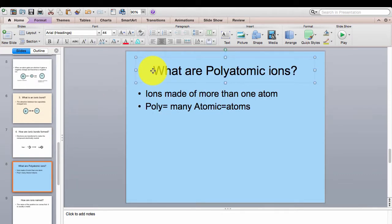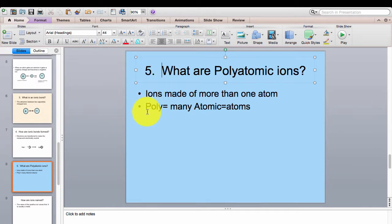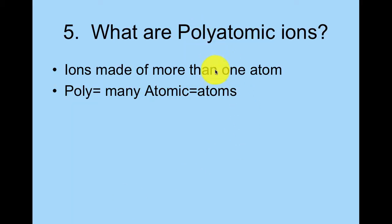What does polyatomic mean? This is number five. Polyatomic ions are ions made of more than one atom. 'Poly' means many, and 'atomic' means atom. So polyatomic means more than one atom. These are polyatomic ions.